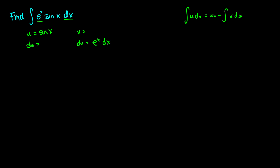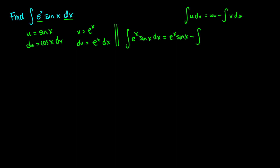To get du we need to take the derivative of sine x, and this is equal to cosine x dx. And to get v we need to take the antiderivative of dv, so this will just be e to the x. Now we can do a substitution. The integral of e to the x sine x dx is going to be equal to u times v, so that is sine x times e to the x, minus the integral of v times du — so that's e to the x times cosine x dx.